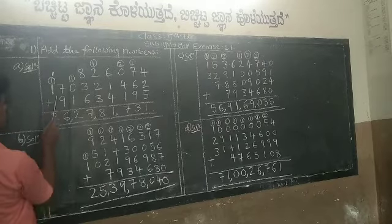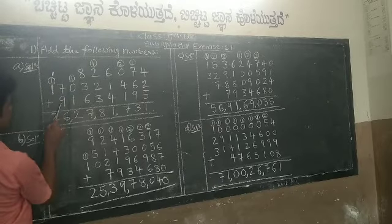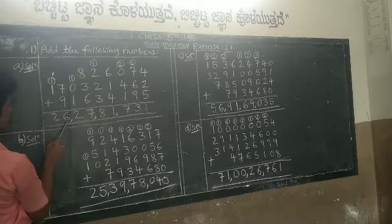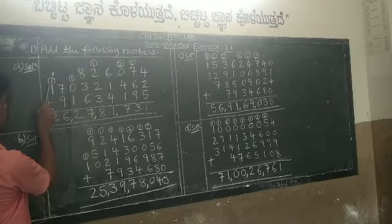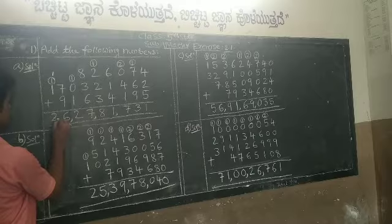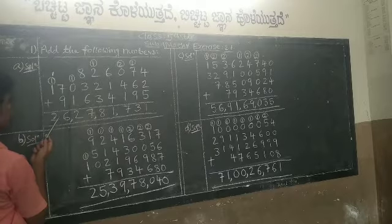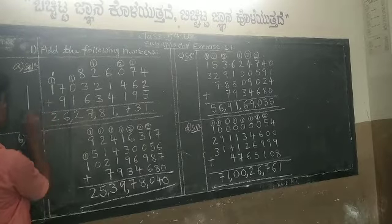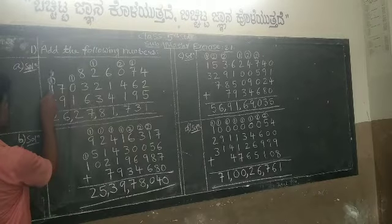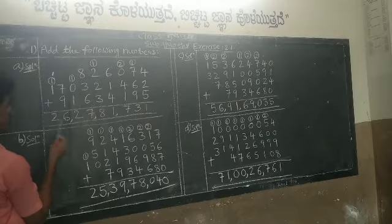In the ten-crores place, there is the carried 1 and one digit 1; no other digits above or below. Add: 1 plus 1 is 2. There is no carry, so the addition is finished. Now you should know how to read the resulting number.